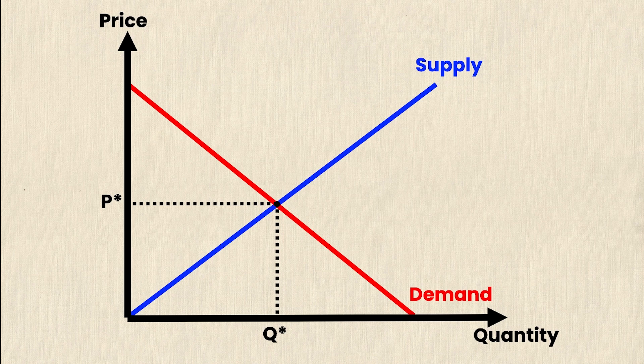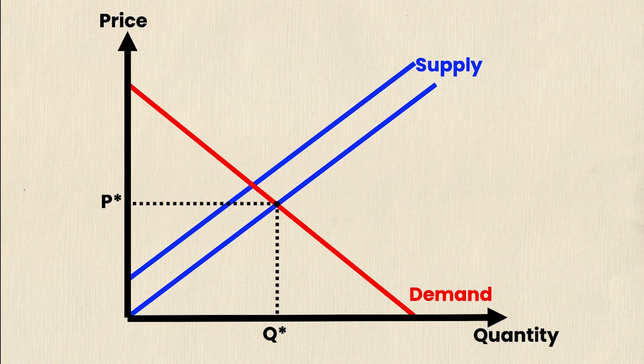Now if a tax is imposed on the supplier, a per unit tax is going to increase the cost to the supplier, and an increase in cost is a shift factor for the supply curve. Increasing cost will shift the supply curve to the left.